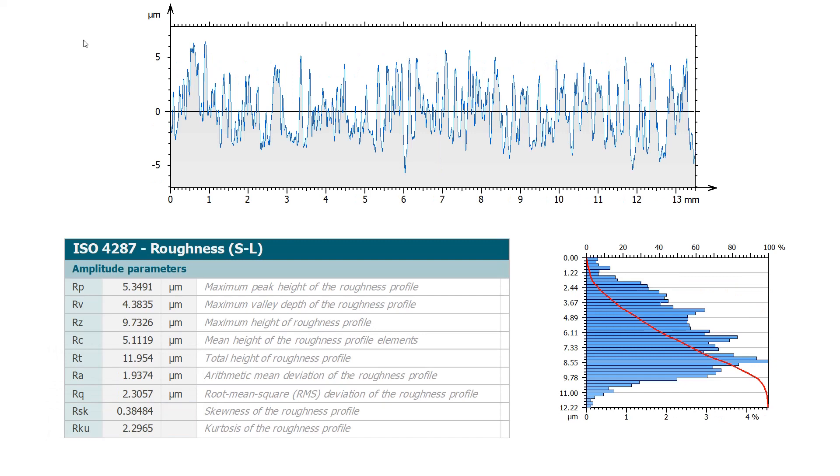Another example, measured on a steel sheet. The texture is well centered around the mean height, without extreme points. It is verified with a small value of RSK and a value of RKU smaller than 3.